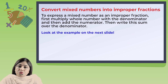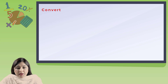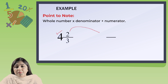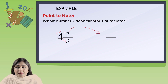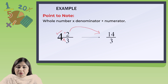Next I am going to teach you how to convert mixed numbers into improper fractions. To express a mixed number as an improper fraction, first multiply the whole number with the denominator, then add the numerator, and write this sum over the denominator. For example, 4 and 2 by 3: multiply 4 times 3 to get 12, then add 2 to get 14. So the answer is 14 by 3. Remember: whole number times denominator plus numerator, over the denominator.